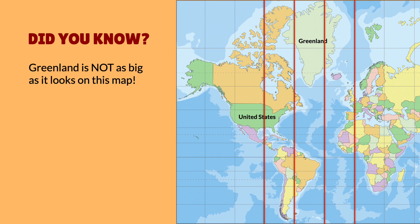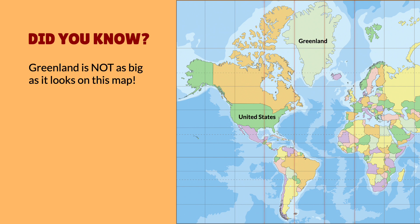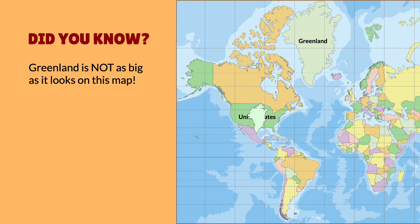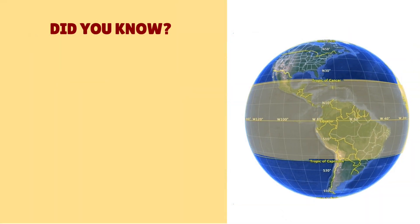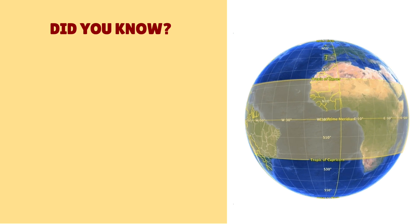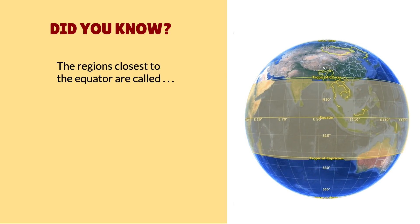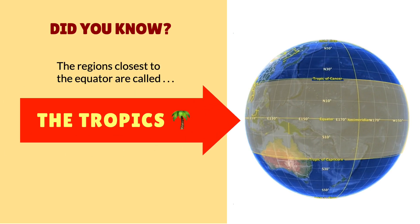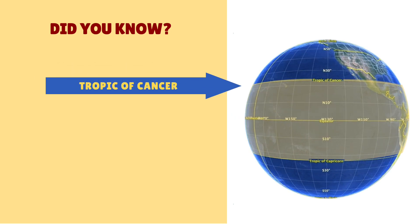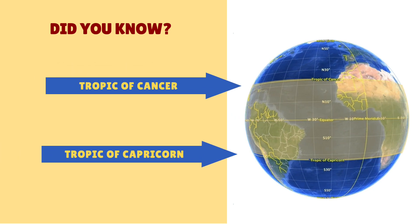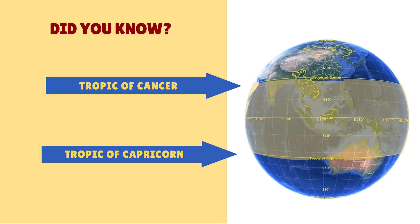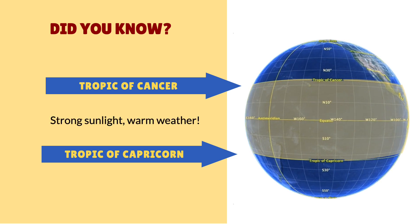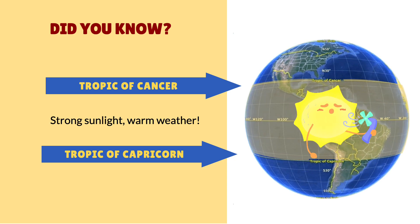Here's another interesting fact. The regions of Earth closest to the equator are called the tropics. The northern boundary of the tropics is called the Tropic of Cancer, and the southern boundary is called the Tropic of Capricorn. The tropics have very strong sunlight all year, which means the weather there is usually warmer than other parts of the Earth.